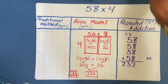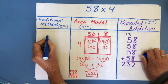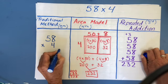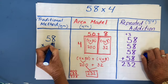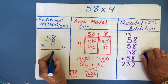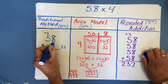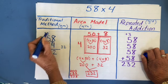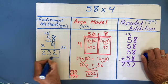Now the traditional method for 58 times 4. Going to the ones house first: 4 times 8 is 32. The ones place goes down, the tens place goes up. Then 4 times 5 is 20, plus 3 carried is 23. There's no hundreds place, so I drop both digits. I get the same answer, 232.